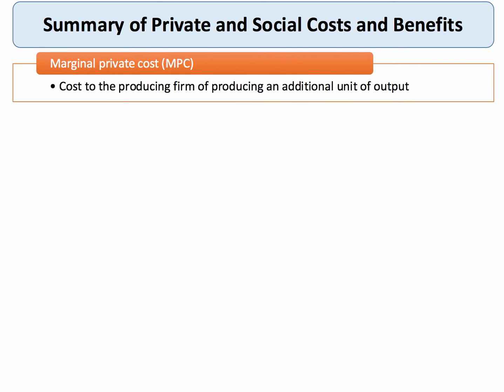Here's a key summary of private and social costs. We're going to be using the word 'marginal' — marginal just means 'the next': the next unit you consume, the next pizza you buy, or from a producer's point of view, the next tonne of cement that's produced or the next barrel of oil extracted from the ground. Marginal just means the next unit.